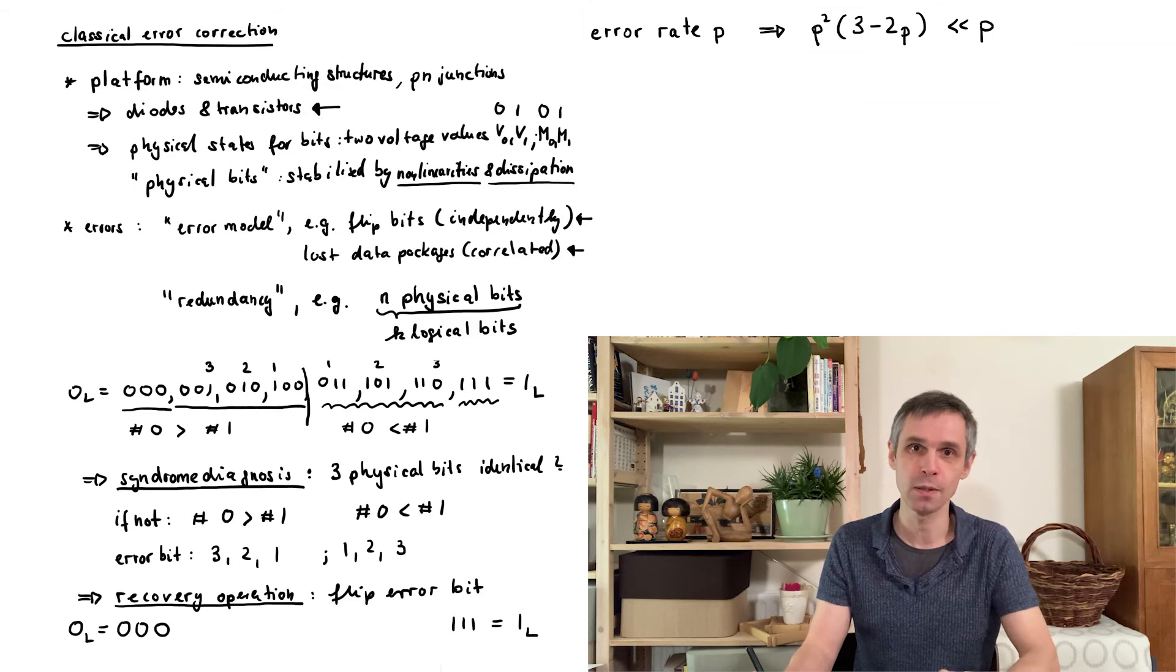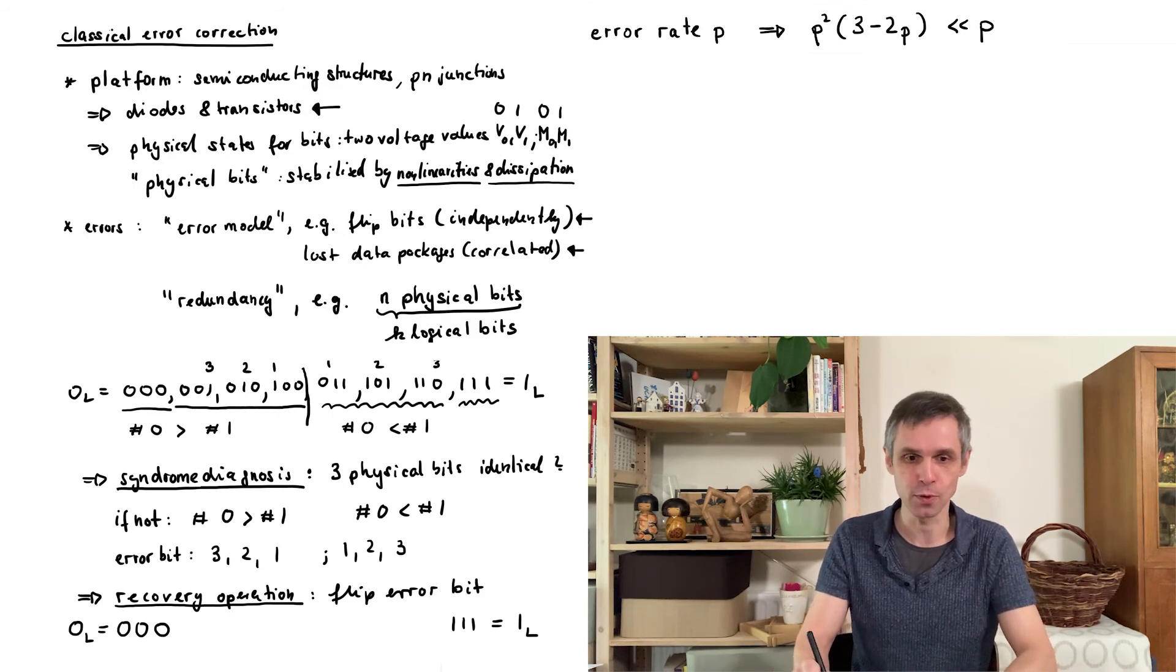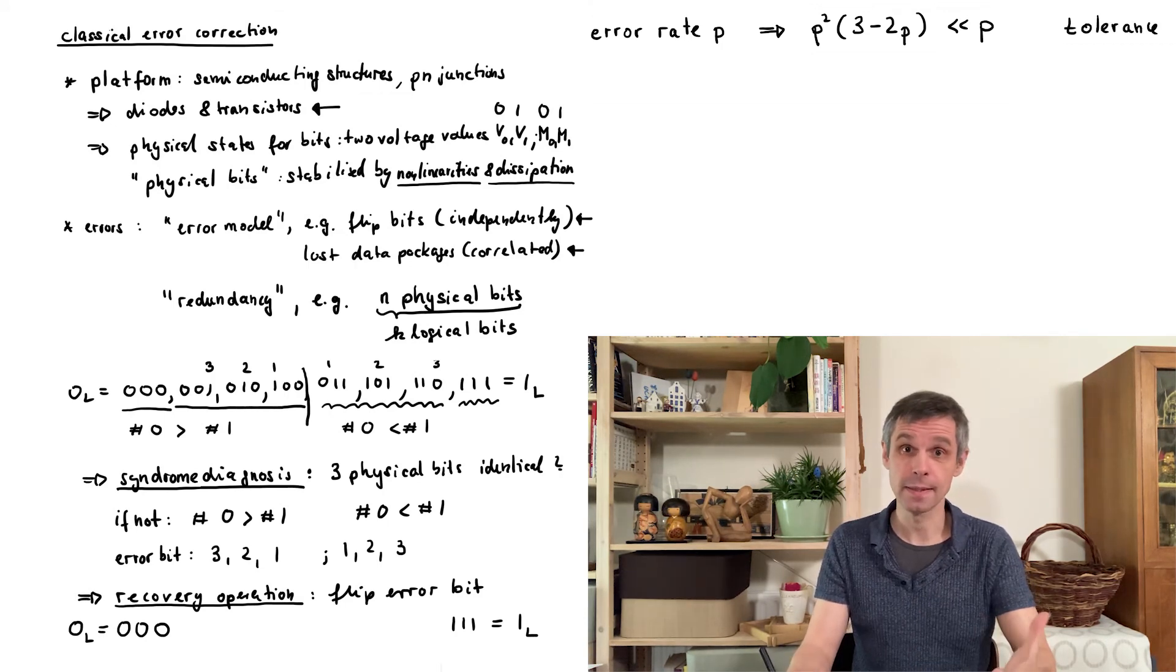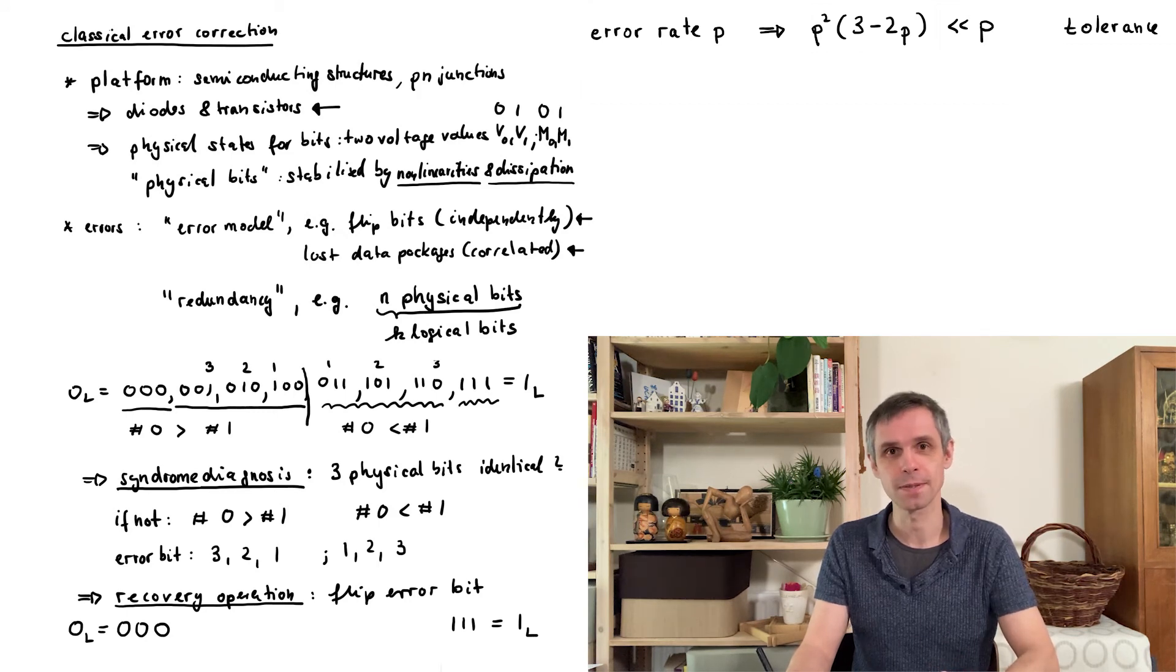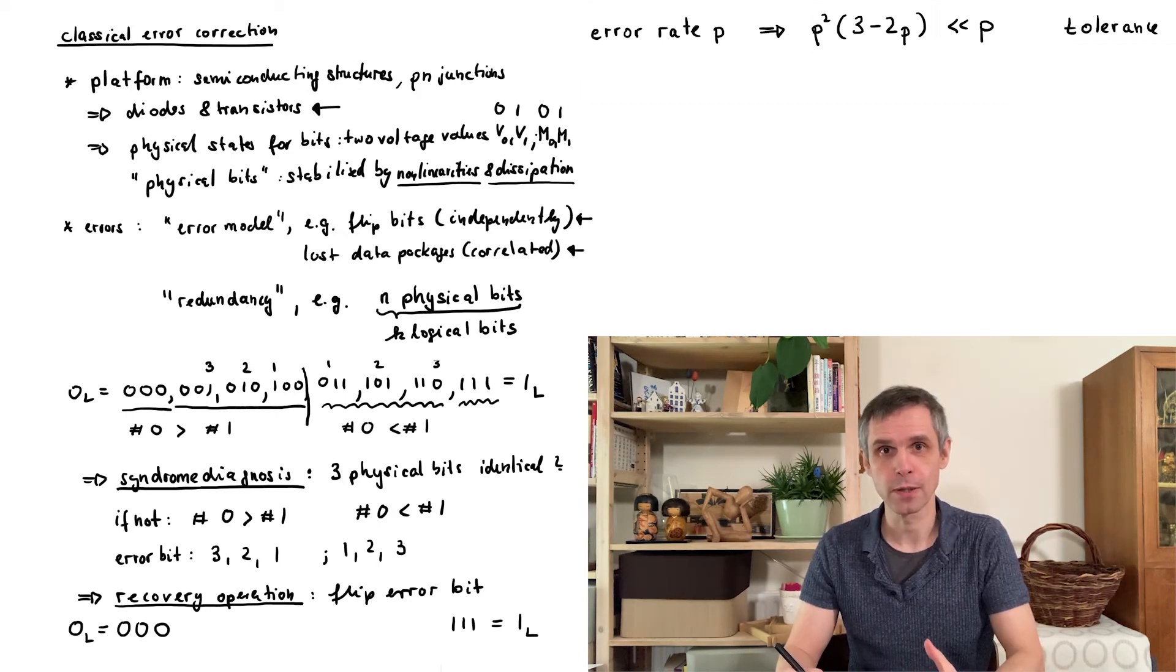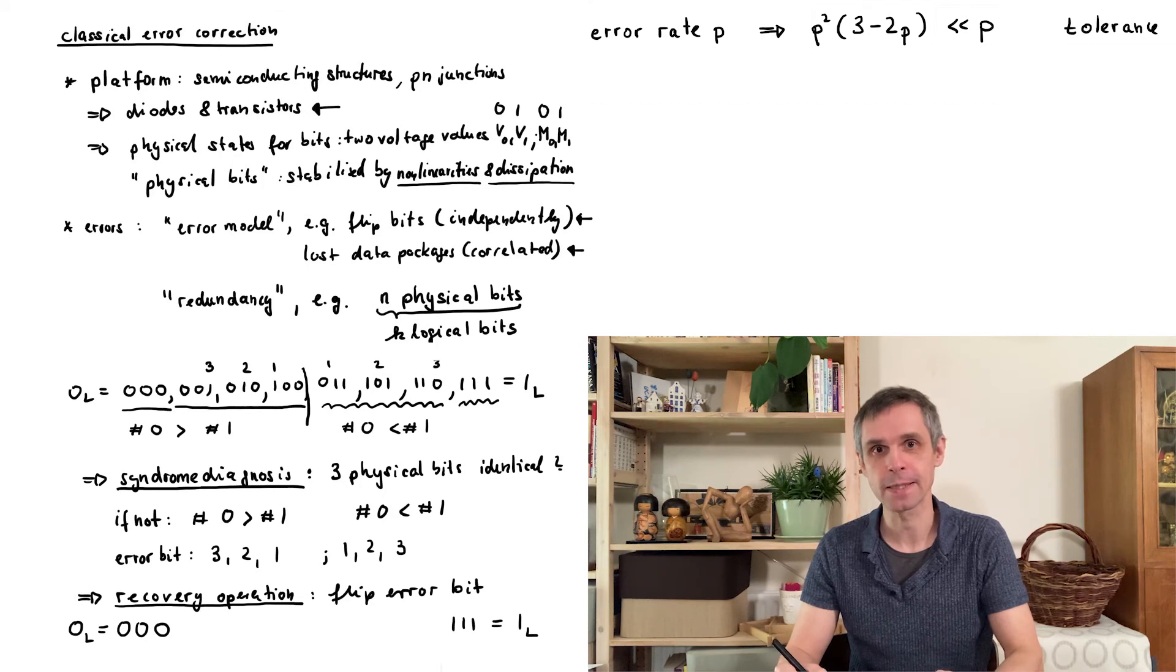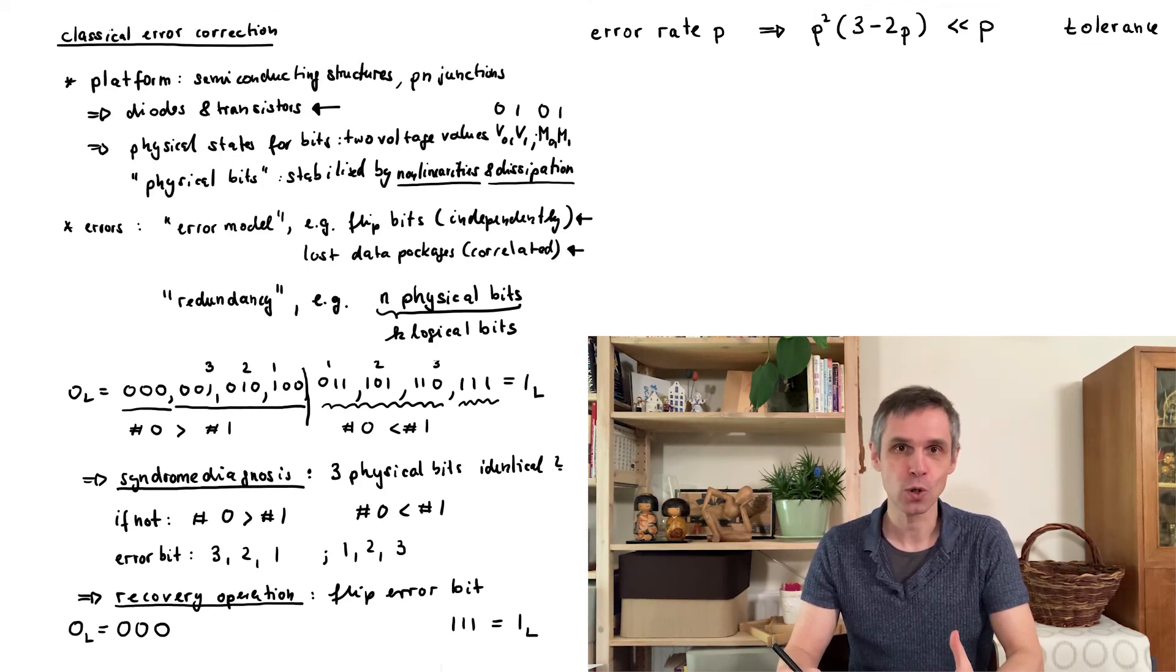And sometimes we will still have some errors that could just occur in the very next step in our computation. So what we also need to set is a certain tolerance. And all of this together then determines how many times we have to carry out these error correction steps. In terms of improvement of the error rate, this simple example is already very efficient. But in terms of physical overhead, it certainly isn't, because we have three times as many physical bits as we have logical bits. But this is because we looked at all of these logical bits individually.